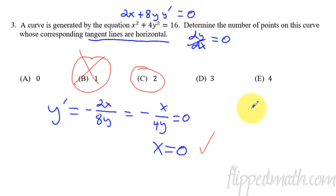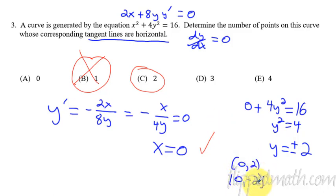0 plus 4y squared equals 16, because then we can know exactly where the coordinate point is. So when you solve that, you get y squared equals 4, or y equals plus or minus 2. There's two separate y values. So that was because the shape of this is actually an ellipse. You didn't have to know that. But this y equals plus or minus 2, there's two coordinate points, 0, 2, and 0, negative 2. That's why there are two points.